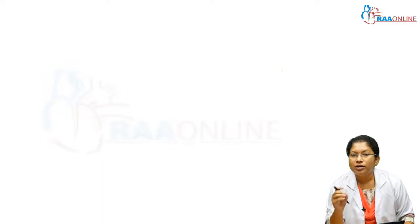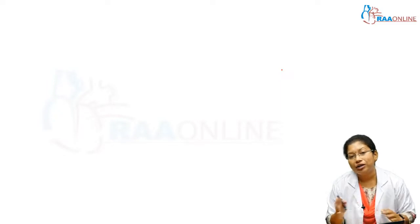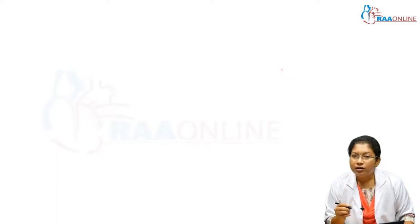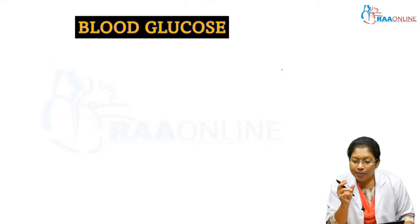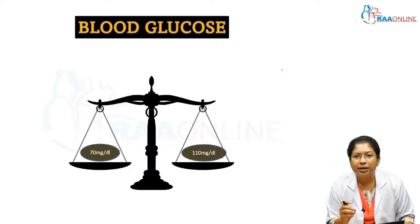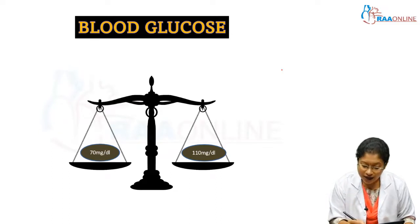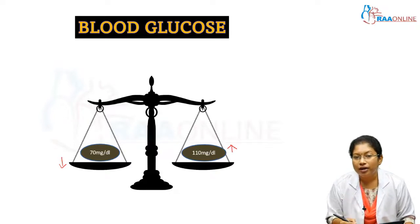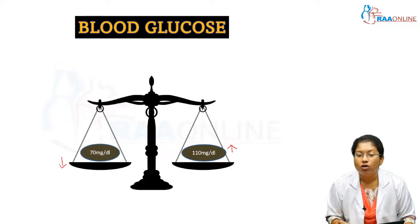In this class we'll look into blood glucose regulation — not the energy fuel metabolism, but how glucose is regulated in the blood circulation and how the levels are maintained. The blood glucose value is balanced within a narrow range of 70 to 110 milligrams per deciliter. If there is any fall or rise beyond this range, it has to be corrected by our system.